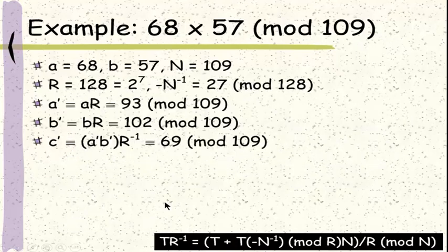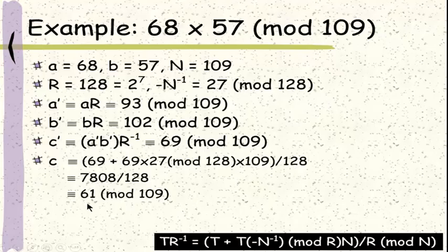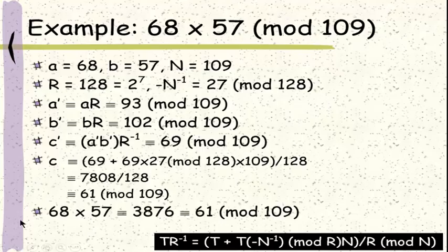Next, we do another round of Montgomery reduction of c prime. We plug in the value of c prime into the formula: c equals c prime (69) plus 69 times 27 mod 128, times 109, divided by 128. And this gives us a result of 61. To verify this is correct, we use straightforward multiplication: 68 times 57 equals 3876, and 3876 mod 109 equals 61, which is exactly the same value.